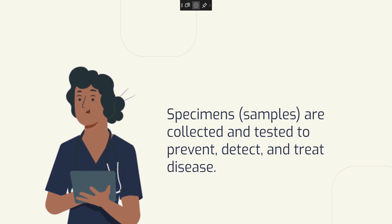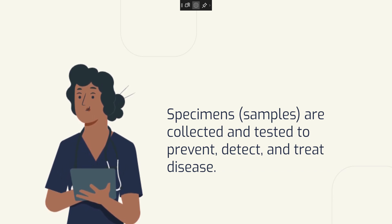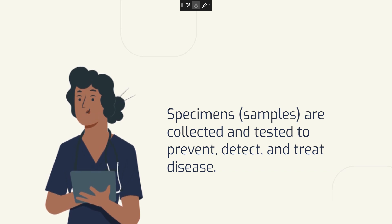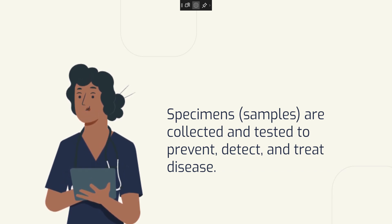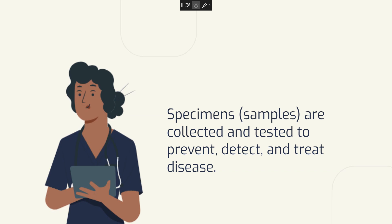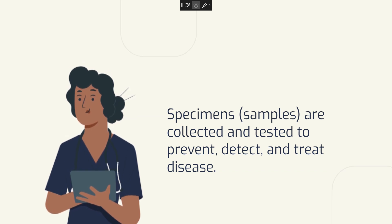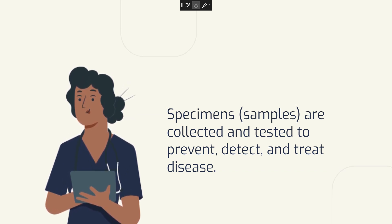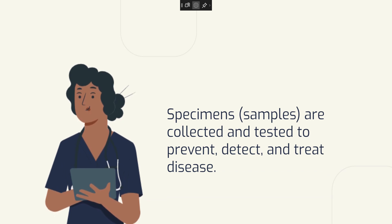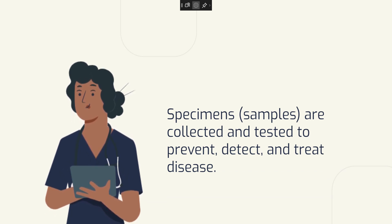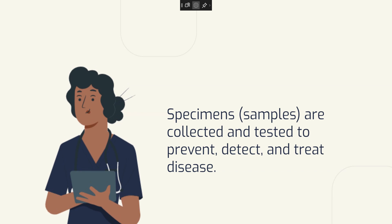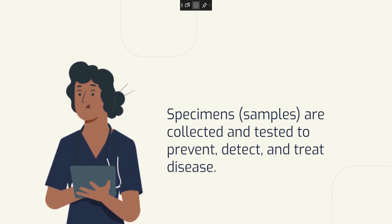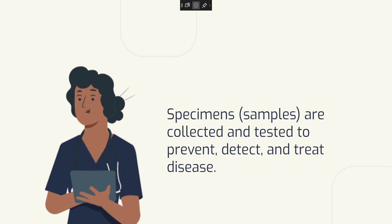When collecting specimens, it's important to use a clean container for each specimen. Do not touch the inside of the container or the inside of the lid. Be sure to identify the person and label the container in the person's presence. Ask the person not to have a bowel movement when collecting a urine specimen, and do not put toilet tissue in with the specimen.